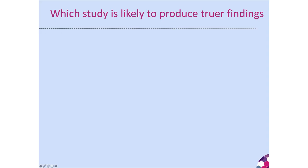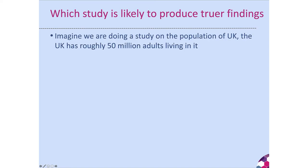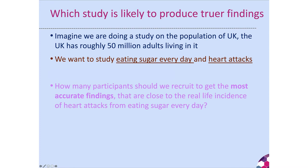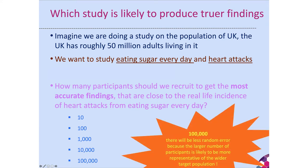Consider this question: imagine we are doing a study on the UK population of roughly 50 million adults, studying eating sugar every day and heart attacks. How many participants should we recruit to get the most accurate findings — 10, 100, 1,000, 10,000 or 100,000? The answer is 100,000, because the more participants we have the less random error there will be, as a larger number of participants are more likely to be representative of the wider target population.